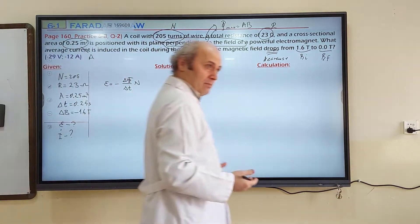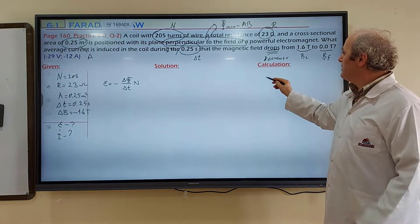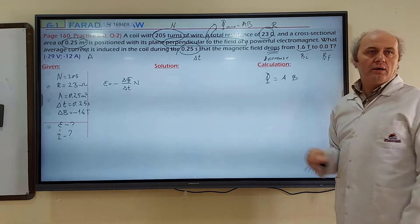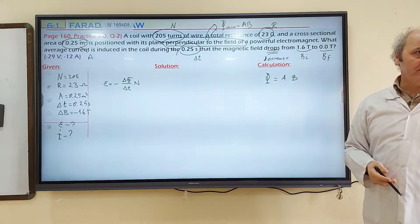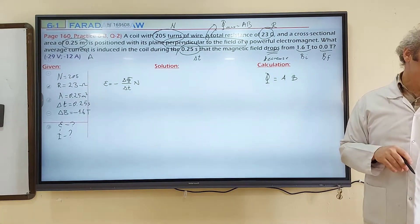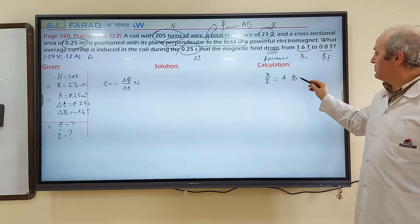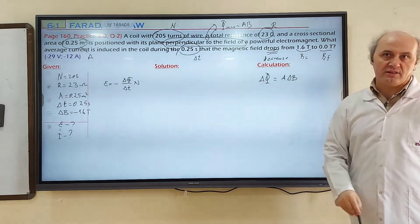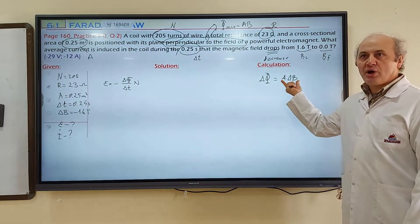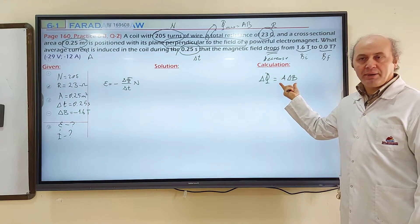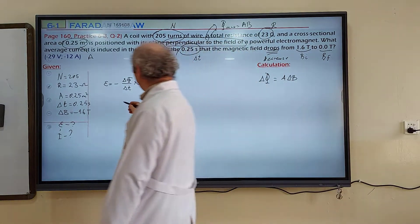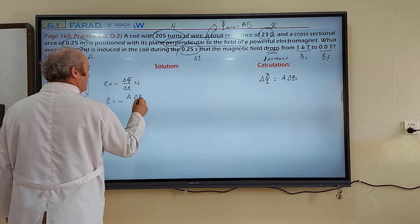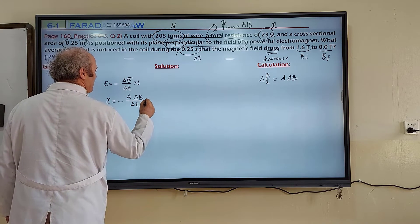There's a change in magnetic flux because of the change in magnetic field. I know that phi equals A times B, correct? This is if magnetic flux is constant. But magnetic flux is not constant, so there's a change in magnetic flux because there is a change in magnetic field, delta B. This delta B must cause a delta phi. Instead of delta phi, what am I going to write? A times delta B. Let's insert it here.